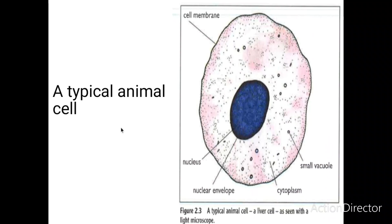In this diagram we can see what a typical animal cell looks like. It has got a cell membrane, a nucleus with the nuclear envelope, the cytoplasm, and small vacuoles. So this is what a typical animal cell looks like.